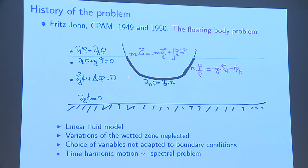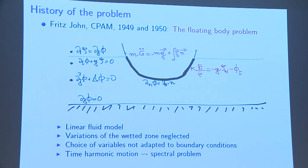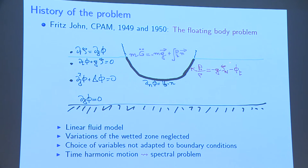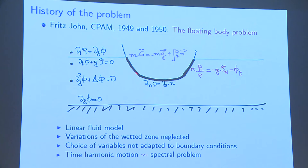He also assumed time harmonic motion, so he could replace d_t zeta by i lambda times zeta, which transformed the problem into a spectral problem. Hundreds of papers exist on this spectral problem. How do you recover the motion of the body? You use the linear Bernoulli equation in the field, which gives you the pressure in terms of the velocity potential and the surface elevation — the hydrostatic pressure. Once you have p, you apply Newton's law for the rigid body: m times the second derivative of the position of the center of mass is given by its weight and the pressure forces exerted by the fluid, as the integral on the boundary of the interior pressure times the normal vector. You also have an equation for angular velocity.